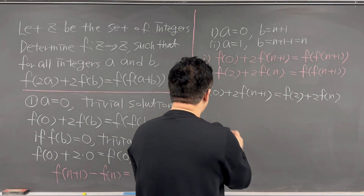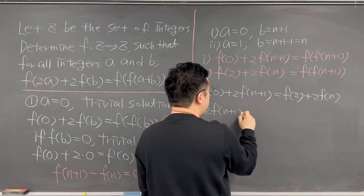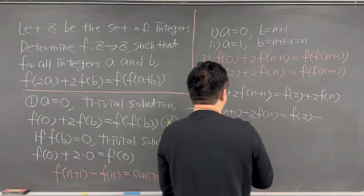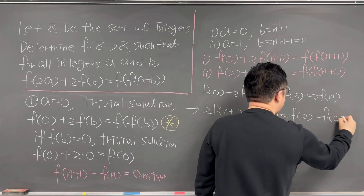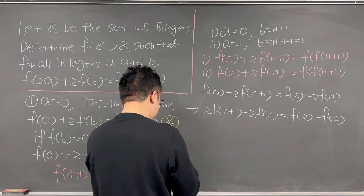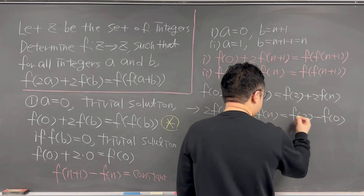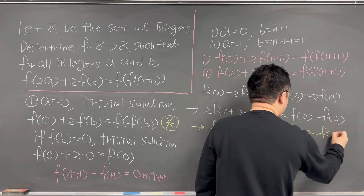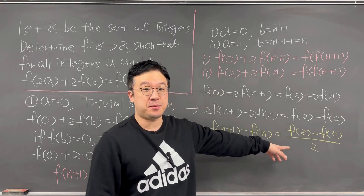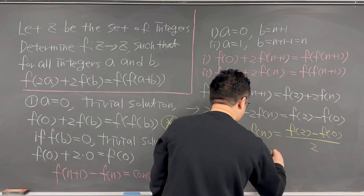Then let's move around the terms. This has to be the same as 2 times f of n plus 1 minus 2 times f of n equals f of 2 minus f of 0. Since we need to show that f of n plus 1 minus f of n is constant, we can rewrite this: f of n plus 1 minus f of n equals f of 2 minus f of 0 over 2. So f of 2 minus f of 0 over 2 has to be a constant, and that's why we just proved that f of x is a linear function.